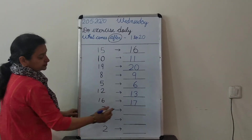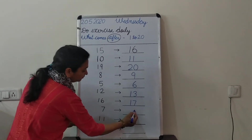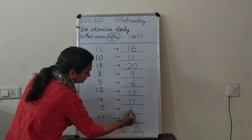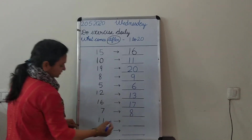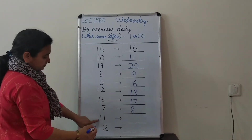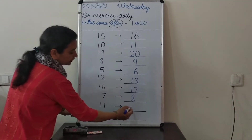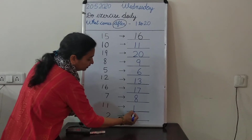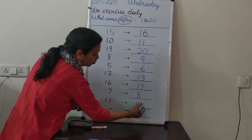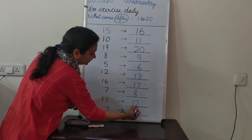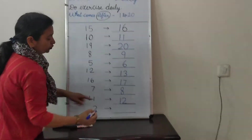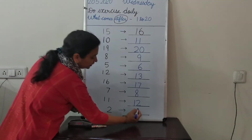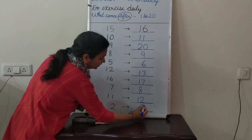And what comes after 7? 8. Nice. What comes after 11? 12. When you write 12, don't write 2 first — it becomes 21. Write 12. What comes after 2? 3. Very nice.